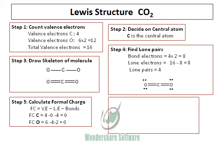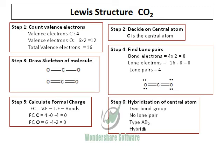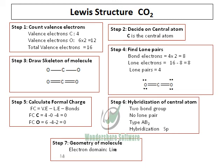Step 6 is to find the hybridization of the molecule. Looking at the carbon dioxide molecule, the central atom carbon is attached to two atoms — the two oxygens. Therefore, there are two bond groups and no lone pairs, making it an AB2 type molecule. The hybridization of the central atom is SP. The electron geometry, because it has two bond pairs and SP hybridization, is linear. The central atom carbon has no lone pair, and hence both the electron geometry and molecular geometry of the molecule are linear.